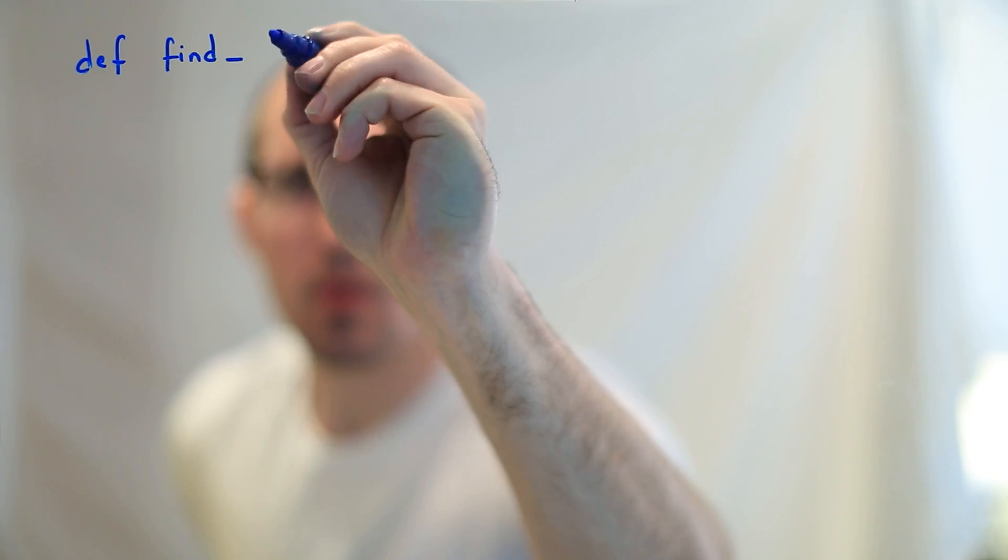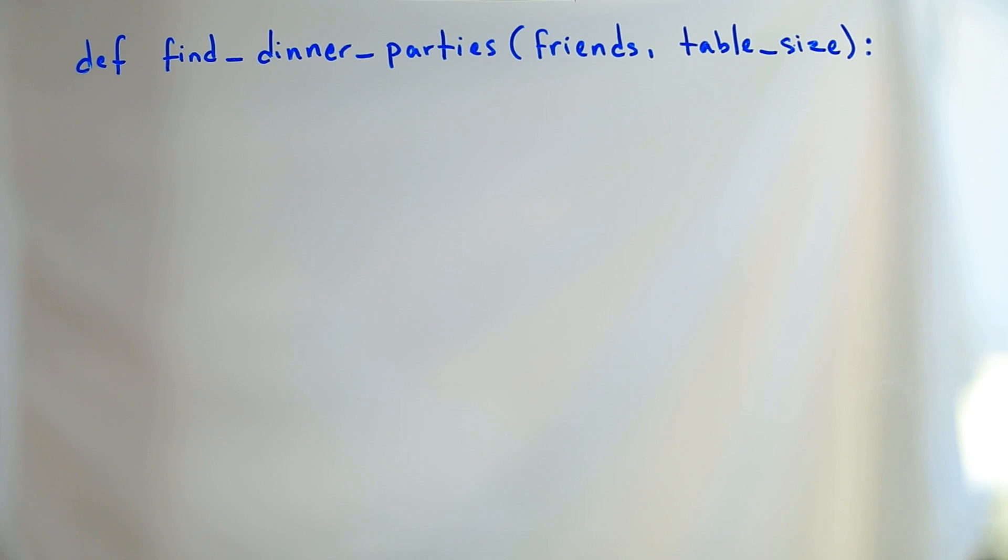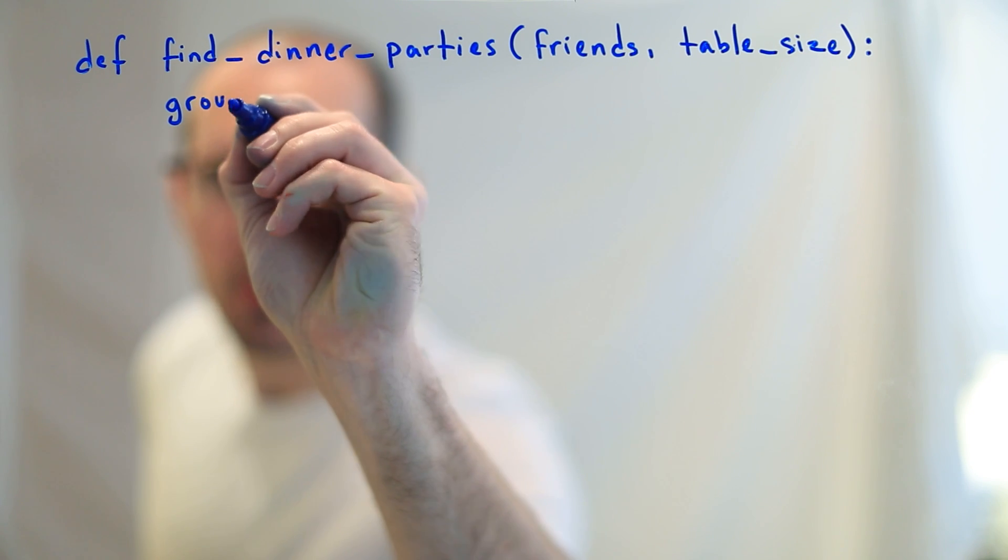Now let's dive into our core algorithm here. What we said was, we want to find all of the possible dinner parties. We've got a table size and we've got a set of friends, and we want to find every party that we can put together to fill that table. It's very often the case with recursive algorithms that the API you want to offer the world is different from the API the recursive function needs. For instance, we only want people who are calling this function to need to know about the friends and the table size. We are going to handle the rest of the complexity behind the scenes.